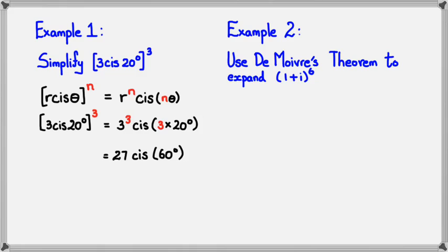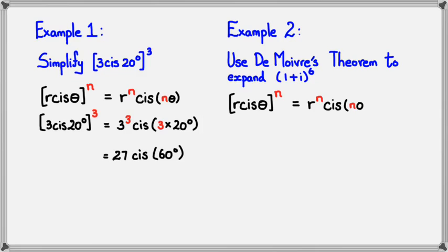For the second example, I want to use De Moivre's Theorem to expand (1 + i) to the power of 6. Those of you with a Casio graphics calculator can put this in and get the simplified answer, but I'm going to show you how to use De Moivre's Theorem. The formula requires r cis θ in polar form, but 1 + i is in rectangular form, so the first step is to convert it to polar form.